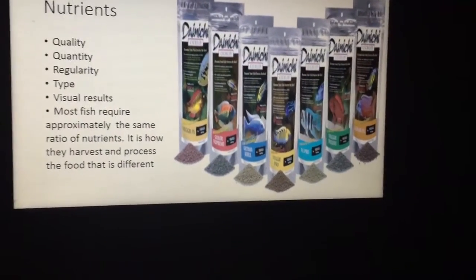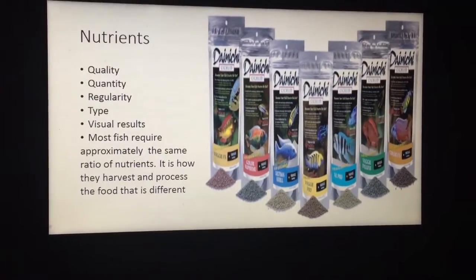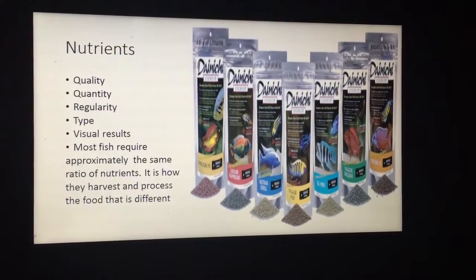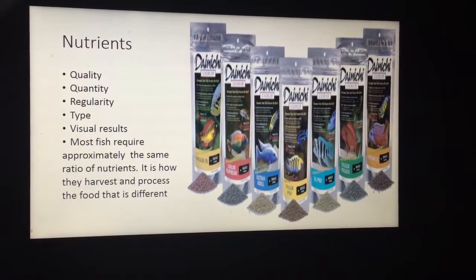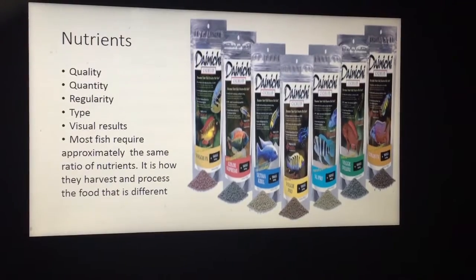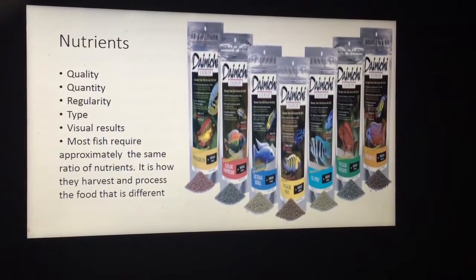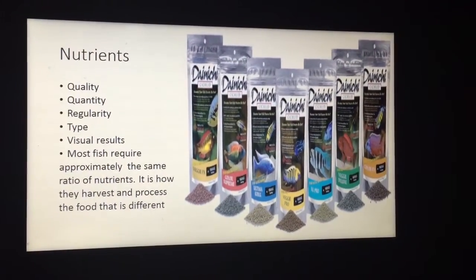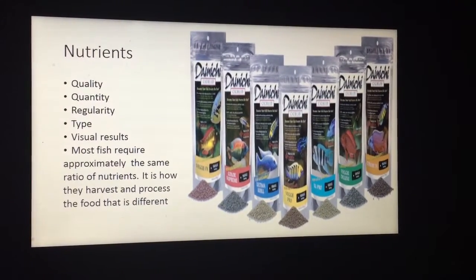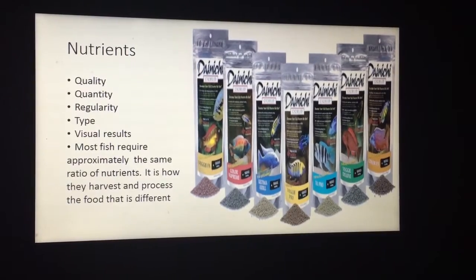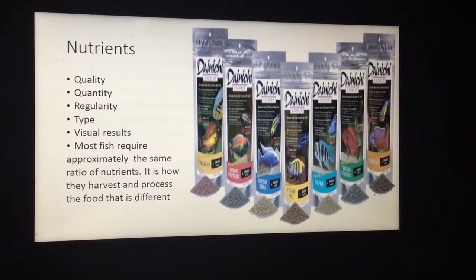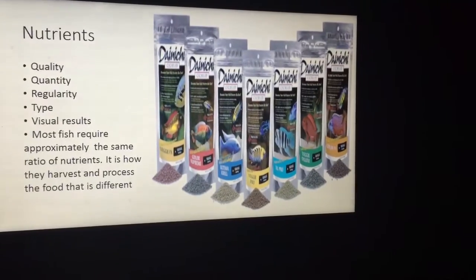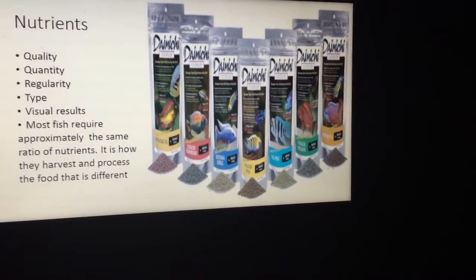Nutrition is pretty much 50% of fish keeping. If you have good quality food, you've pretty much won the battle. The quality of the food is everything. Understanding the quantity is also important — a lot of people overfeed. Consider how often you feed and the types of food you feed. Most fish require approximately the same ratio of nutrients; it's how they harvest and process the food that makes a difference. Try something, run it for three months, then try something else — if it didn't work, go back to the old approach.